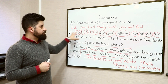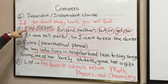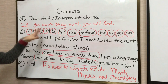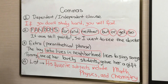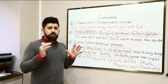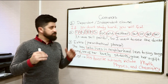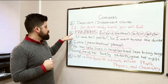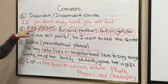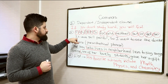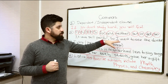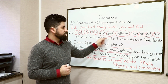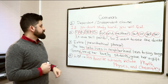The second category is FANBOYS, where each capital letter refers to a conjunction: For, And, Nor, But, Or, Yet, So. Keep in mind that you cannot put a single comma between two complete or independent sentences — to connect them, you must use these conjunctions. For example: 'It was still painful, so I went to see the doctor.' Two complete sentences are connected with the conjunction 'so,' and before it we put a comma.